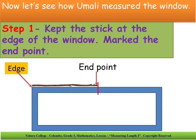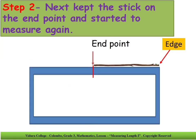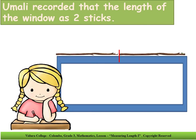First, she kept the stick at the edge of the window as shown below. Then she marked the end point. Next, she kept the stick on the end point and started to measure again. After measuring the window using the stick, she found that the length of the window is two sticks long.